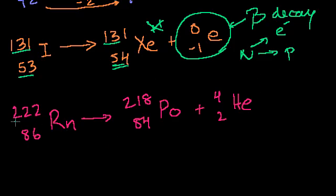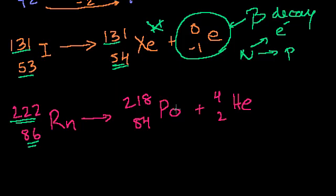Now let's do one more. We have radon-222, with an atomic number of 86, going to polonium-218 with an atomic number of 84. This is an interesting aside: polonium is named after Poland, because Marie Curie, at the turn of the last century around the end of the 1800s, Poland didn't exist as a separate country — it was split between Prussia, Russia, and Austria. They really wanted to let people know they thought they were one people, so when they discovered this element from radon decay, they named it after their motherland, Poland.